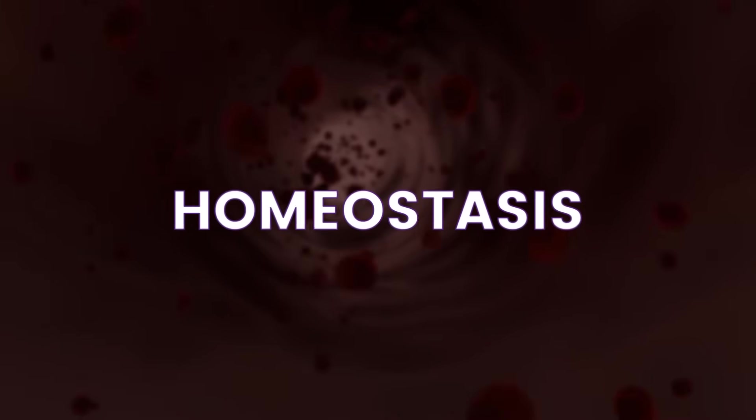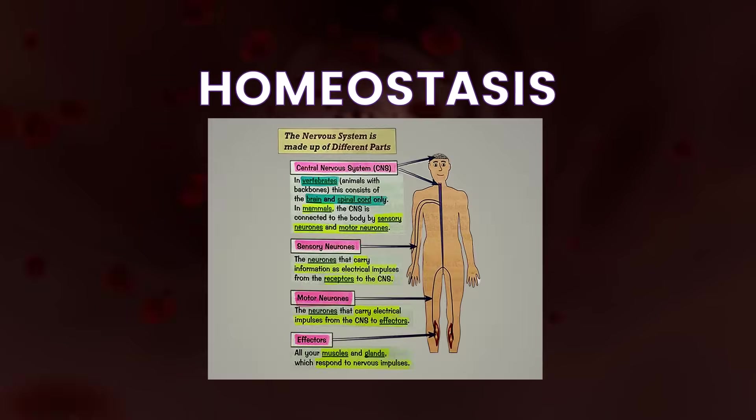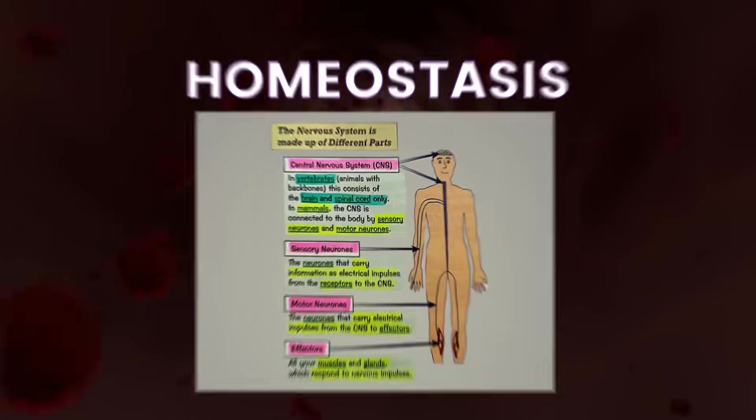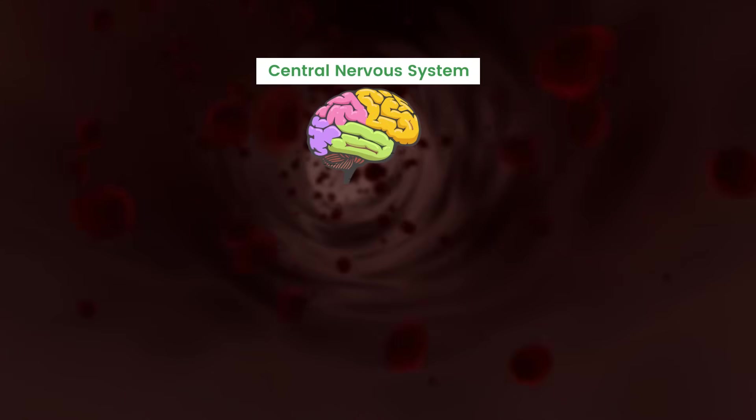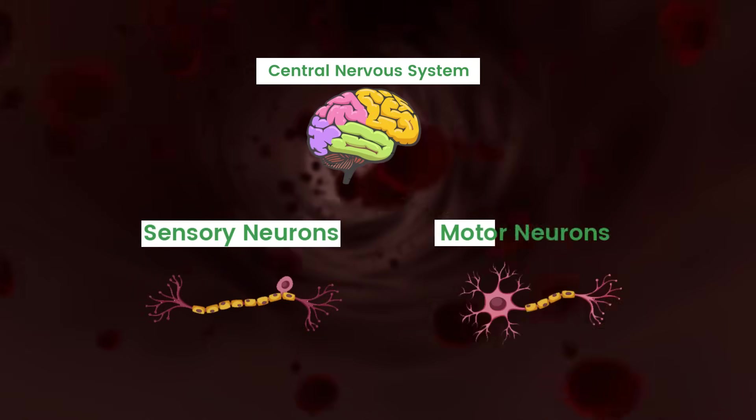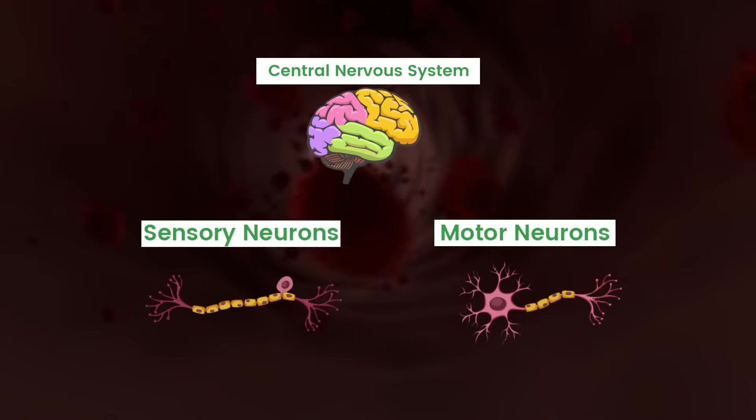In terms of homeostasis, it's going to be very important to know the different parts of the nervous system — the central nervous system, sensory neurons, motor neurons, and effectors. Just be prepared to answer any question if they ask you directly what one of these components are.